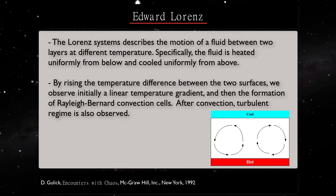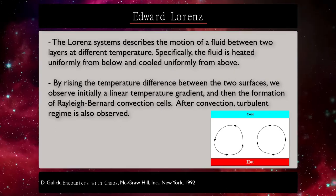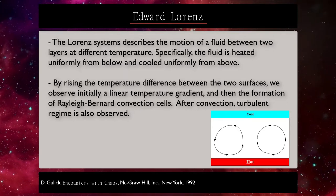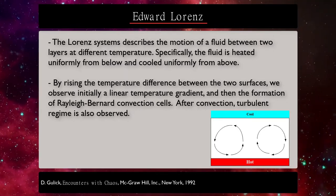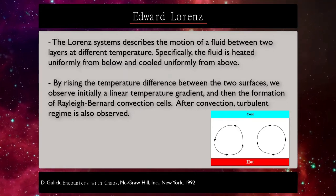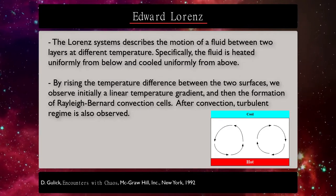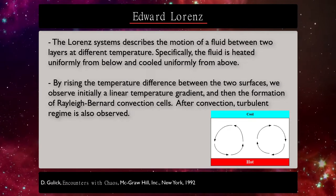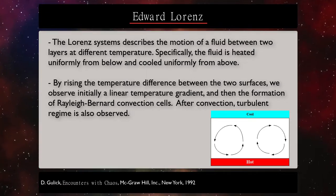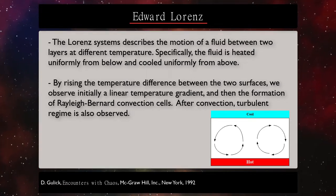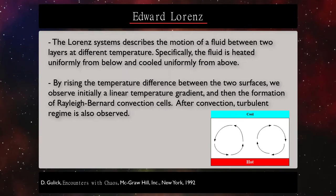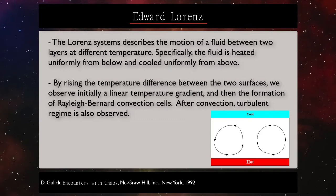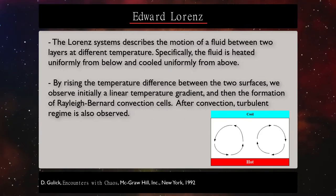The Lorenz system describes the motion of a fluid between two layers at different temperatures. Specifically, the fluid is heated uniformly from below and cooled uniformly from above. By raising the temperature difference between the two surfaces, we observe initially a linear temperature gradient and then the formation of Rayleigh-Bénard convection cells. After convection, a turbulence regime is also observed.